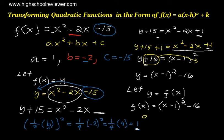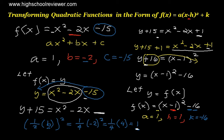Substituting back f(x) for y, this will now be f(x) equals the quantity of x minus 1 raised to the power of 2 minus 16. Our a, since there is no number, is considered as 1. Our h, since the form is x minus h and this is x minus 1, our h equals positive 1. Our k is the last term, which is negative 16. Therefore, f(x) equals the quantity of x minus 1 raised to the power of 2 minus 16. This is our final answer.